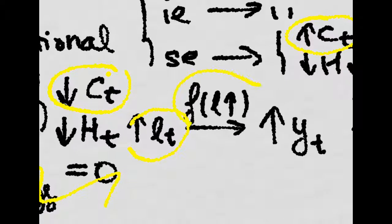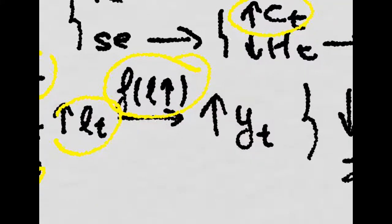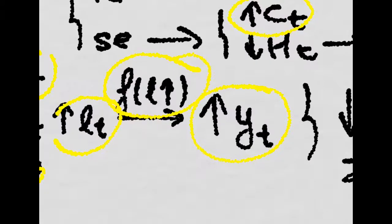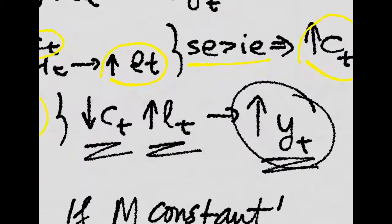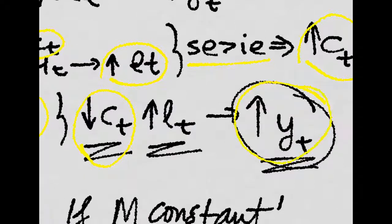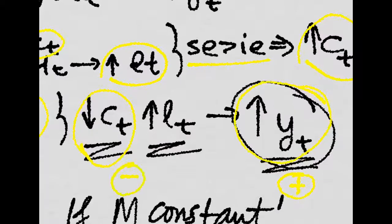If you want to work more now, your production function goes up, meaning production increases because of the increase in labor. Thus, an increase in the interest rate decreases consumption and also increases production. So, production depends positively on the interest rate, and consumption depends negatively on the interest rate.